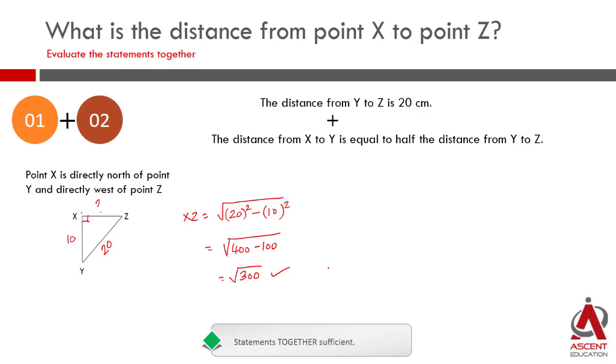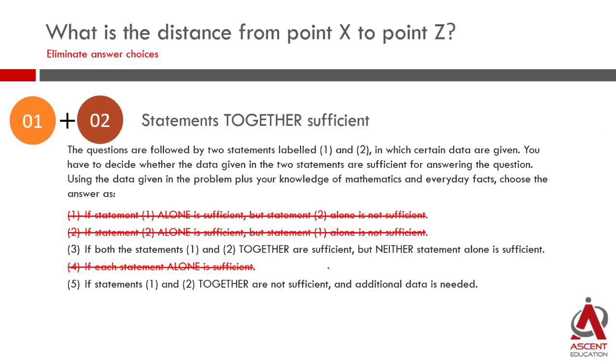So the two statements together are sufficient to answer the question. The answer choice could be either 3 or 5, but the data is sufficient. We can eliminate answer choice 5. Choice 3 is the correct answer.